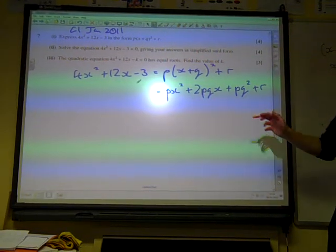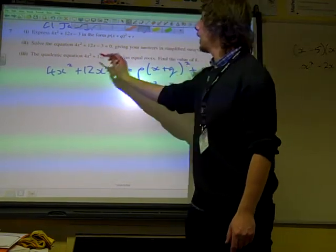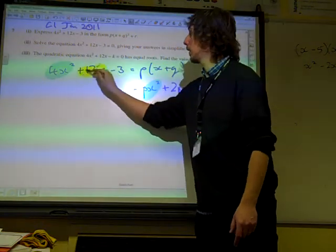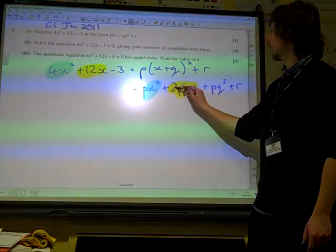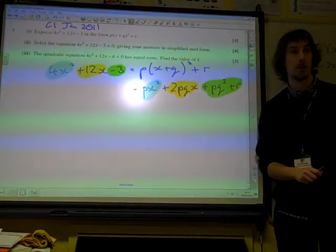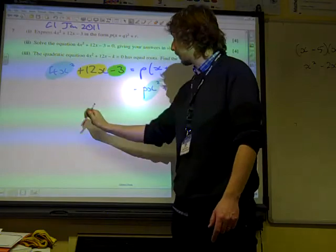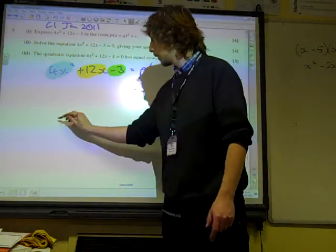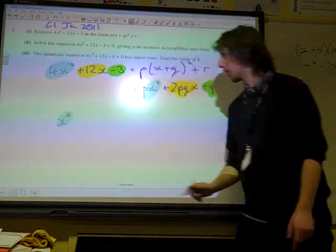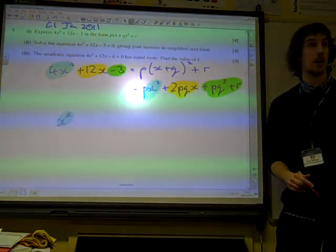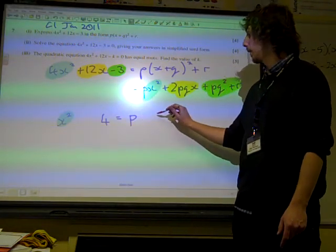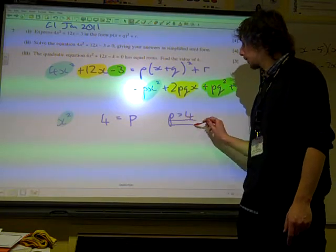Now we're going to compare coefficients. Remember, this is that bit where we just compare the x squareds and the x's and the number bit, and they have to be the same on both sides. If we look at the x squared term first, the bit we coloured in blue, we've got 4 on the left, we've got p on the right. So p equals 4. That's a good start.